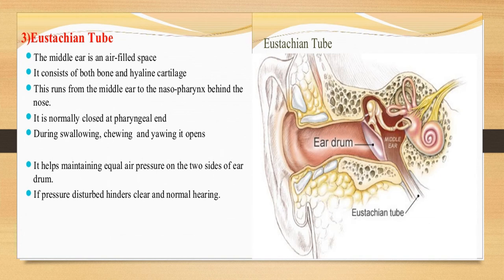The last part of the middle ear is the Eustachian tube — an air-filled space consisting of both bone and hyaline cartilage. It runs from the middle ear to the nasopharynx behind the nose, closed at the pharyngeal end and opening during swallowing and chewing. It helps in maintaining air pressure on both sides of the ear; if pressure is disturbed, it hinders clear and normal hearing.